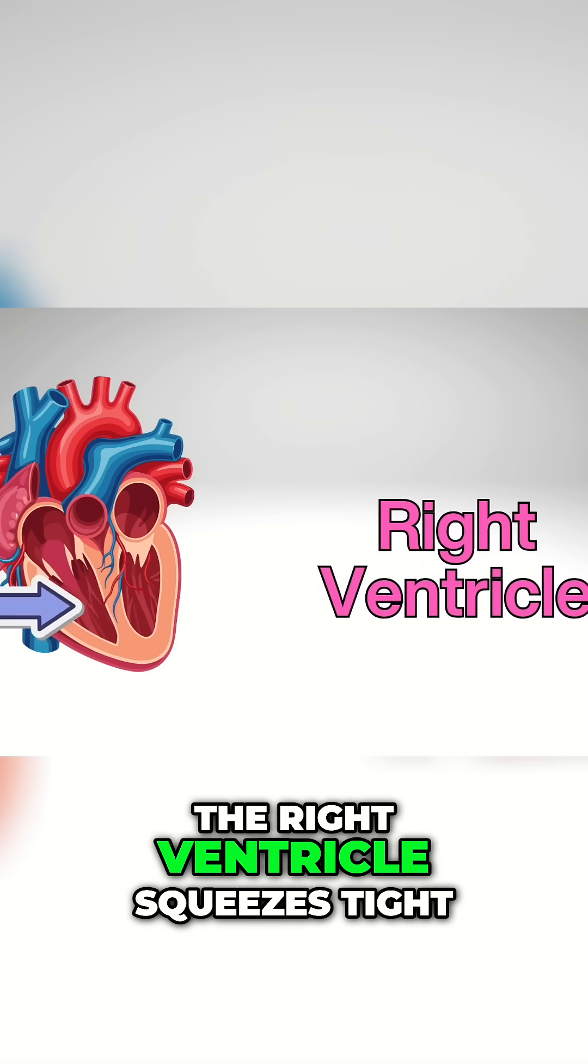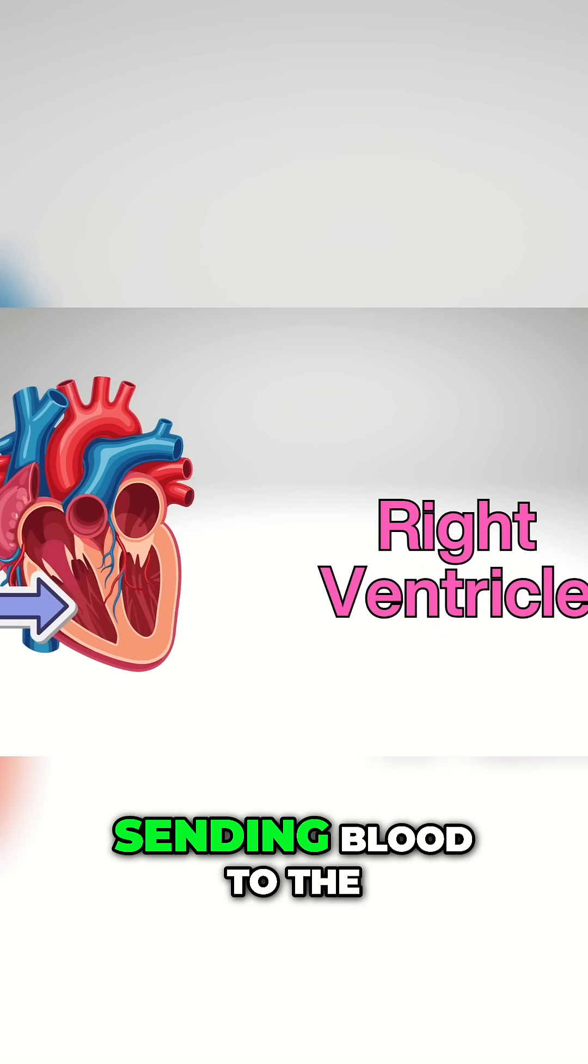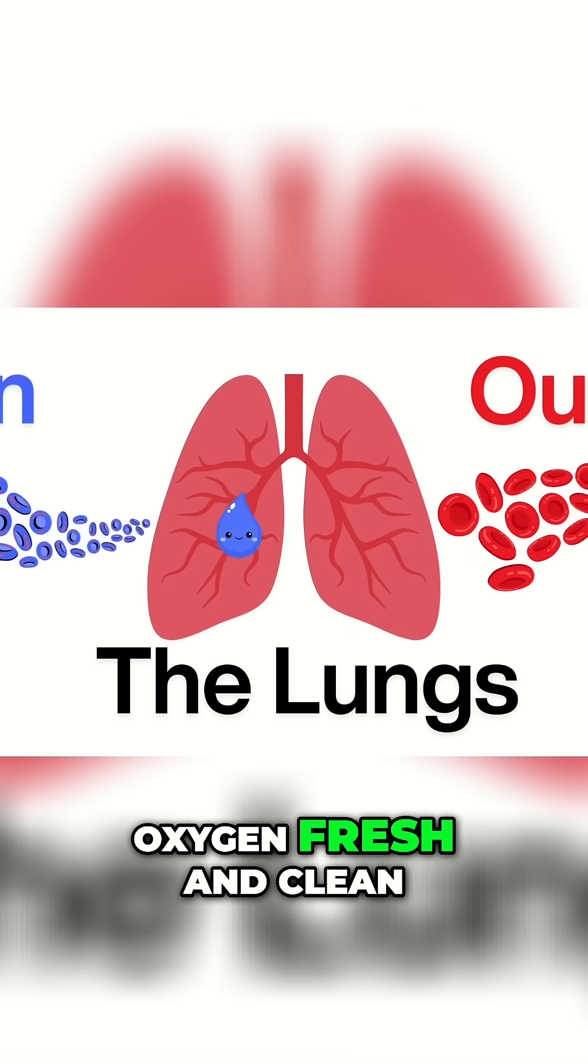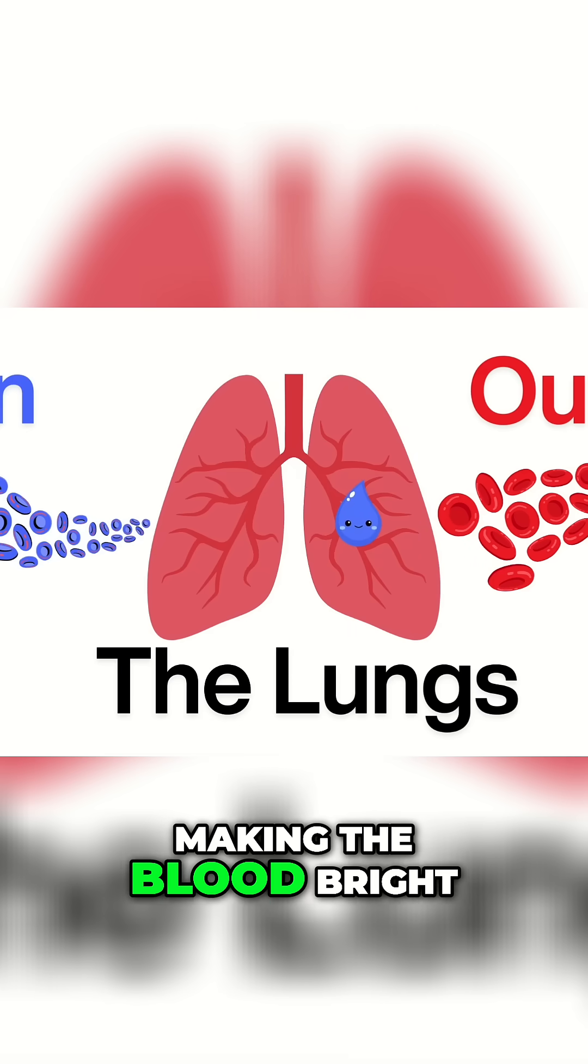The right ventricle squeezes tight, sending blood to the lungs just right. There it picks up oxygen, fresh and clean, making the blood bright and full of oxygen.